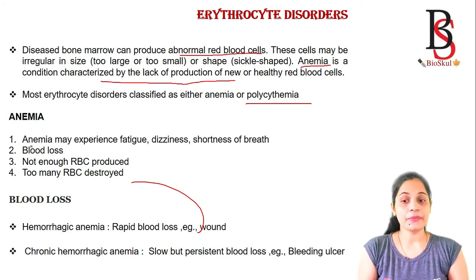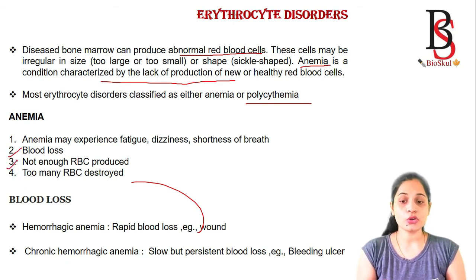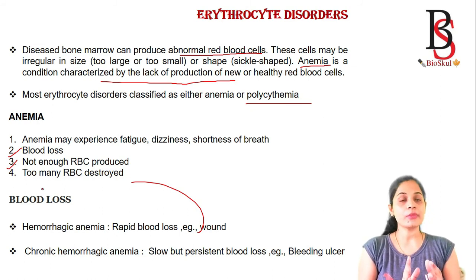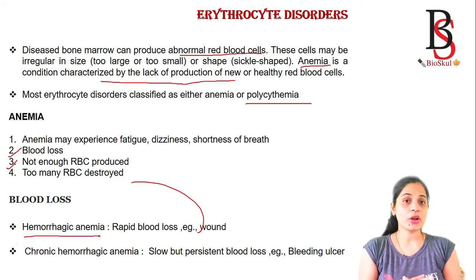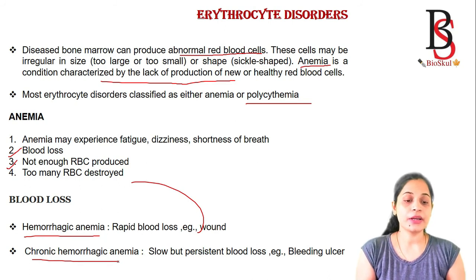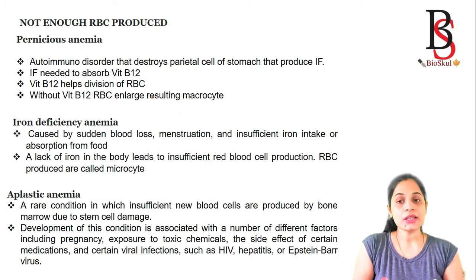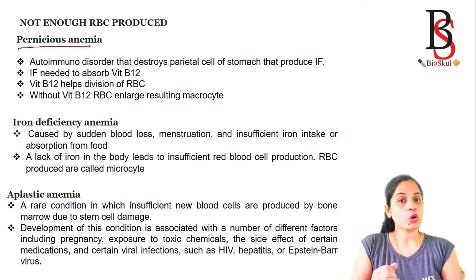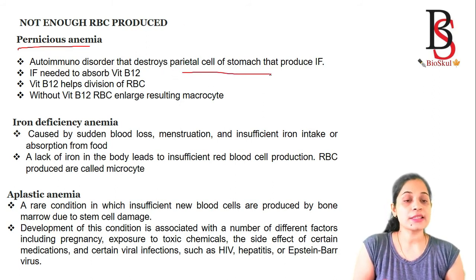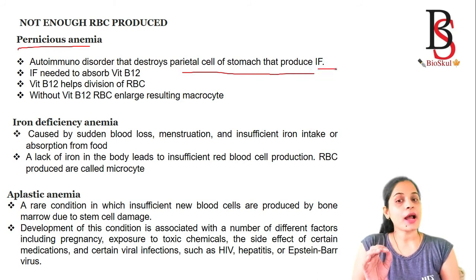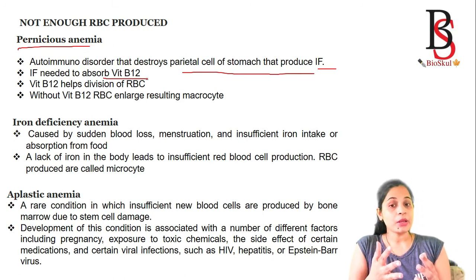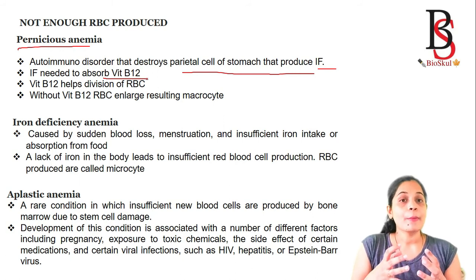Anemia may be caused by blood loss, insufficient RBC production, or excessive RBC destruction. Blood loss causes hemorrhagic anemia — rapid blood loss from wounds — and chronic hemorrhagic anemia from slow persistent blood loss such as bleeding ulcers. Pernicious anemia is an autoimmune disorder that destroys parietal cells of the stomach, which produce intrinsic factor needed for vitamin B12 absorption; without vitamin B12, RBCs enlarge, causing macrocytic anemia.